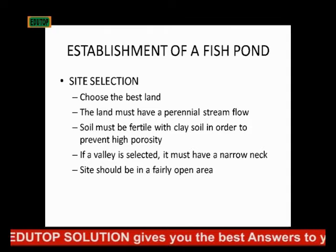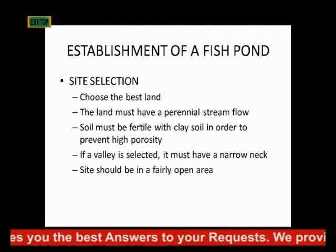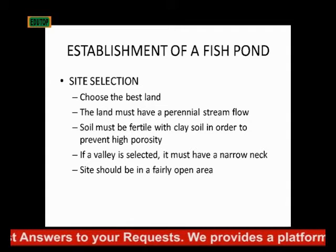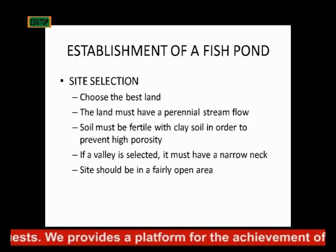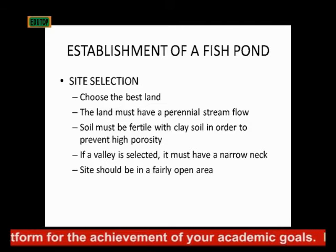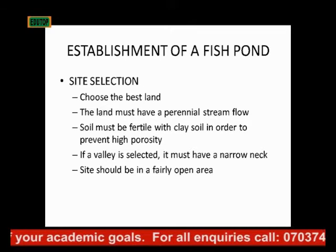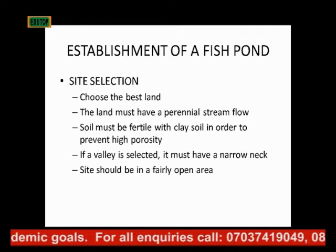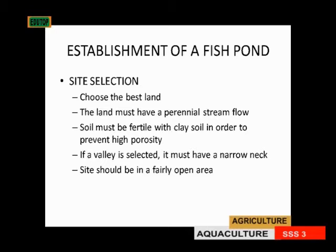Now, the steps in establishing a fish pond. First is site selection. Choose the best land — the land must have a perennial stream flow, so water should be very close to where your fish pond is. The soil must also be favorable, with clay soil, to prevent high porosity.